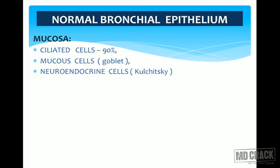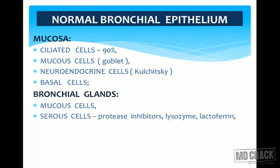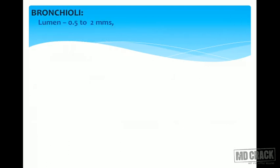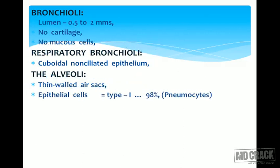Normally the lungs are not easily infected because we have a lot of barriers. We have a mucosa composed of stratified ciliated columnar epithelium — 90% of the cells are these ciliated cells. We have thick mucus secretions by goblet cells, neuroendocrine cells, and basal cells. In the mucosa we have bronchial glands with mucous cells and serous cells. In the bronchioles, the lumen is almost around 2 millimeters in diameter.